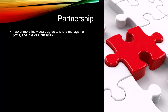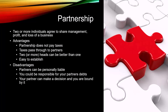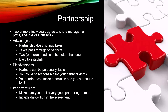Another frequently used starting structure is a partnership, where two or more individuals agree to share the management, profit, and loss of a business. A partnership does not pay taxes — they pass through to each partner. Two or more heads can be better than one, and it's fairly easy to establish. Disadvantages include partners being personally liable, being responsible for a partner's debts, and being bound by a partner's decisions. If you go this route, it's very important to draft a solid partner agreement that includes how to dissolve the partnership if partners can no longer work together.